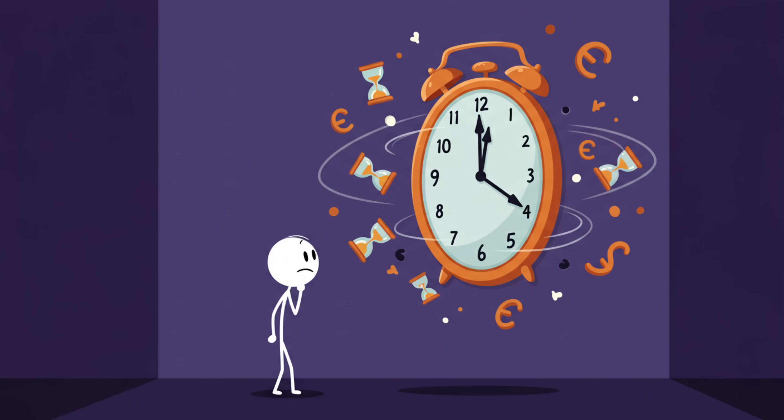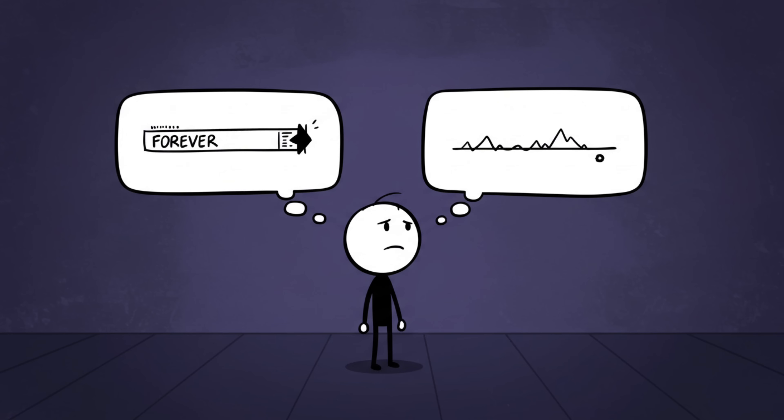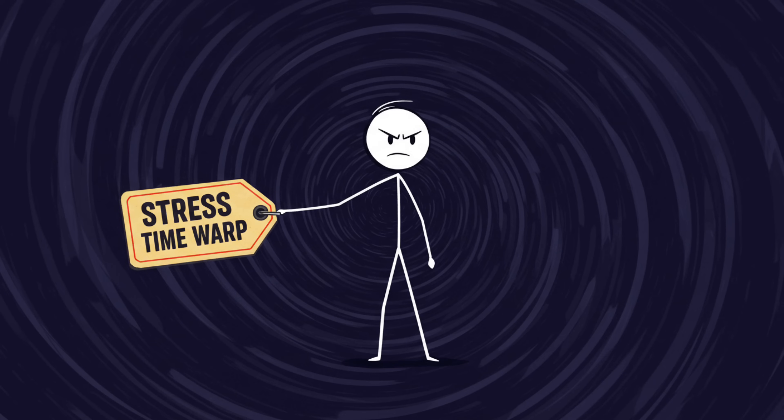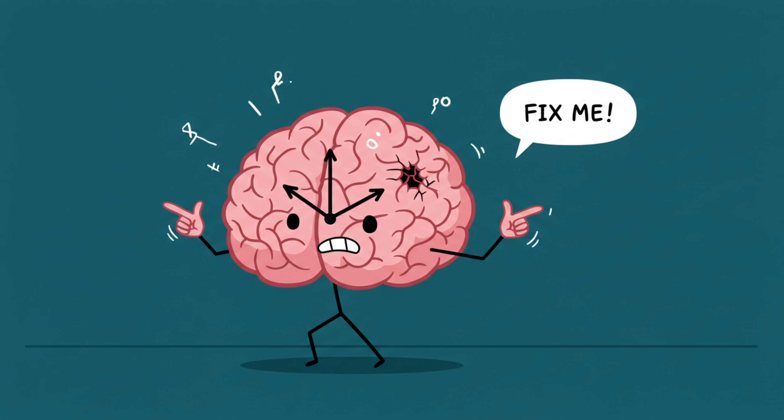Number 4, Stress Time Warp. You know how stressful moments feel like they last forever, but later, they shrink down to a blur? That's the stress time warp. Basically, stress messes with your brain's internal clock, which, let's be honest, wasn't that reliable to begin with.